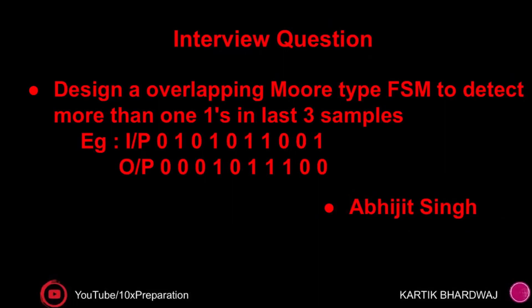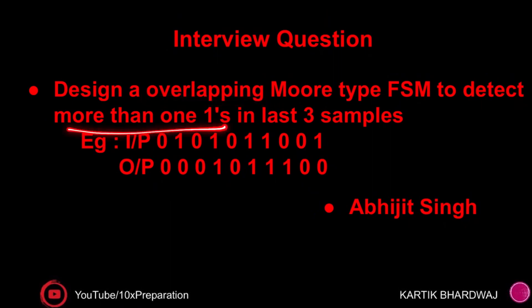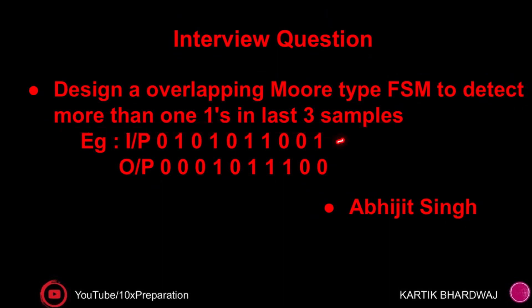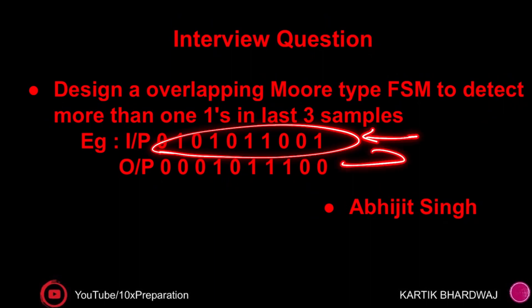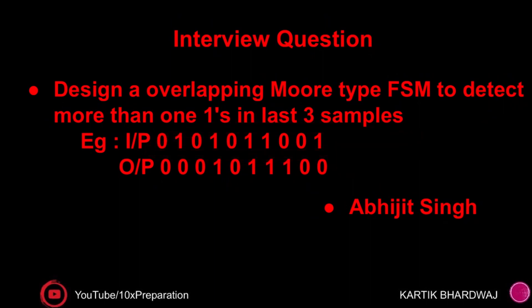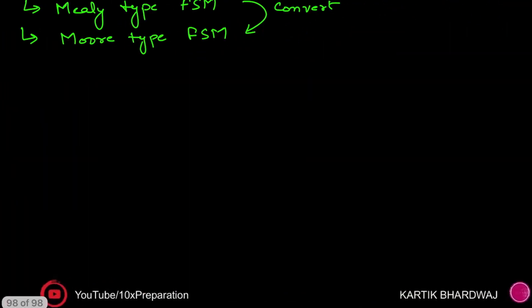This question was asked by Abhijit Singh. In this question we are asked for the Moore type FSM, and that is overlapping type. We have to detect a pattern where the number of ones is more than one in the last three samples. They have also given one example — for this input, the corresponding output should be there.